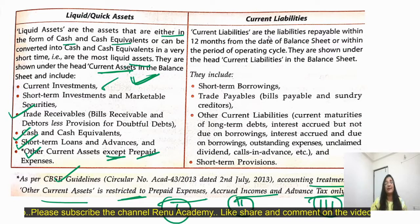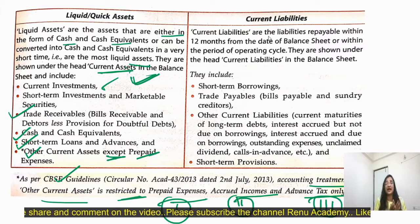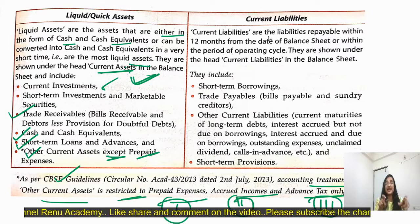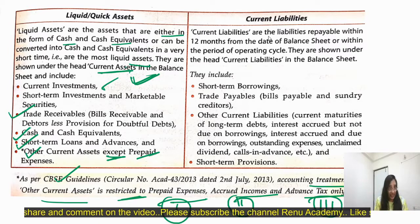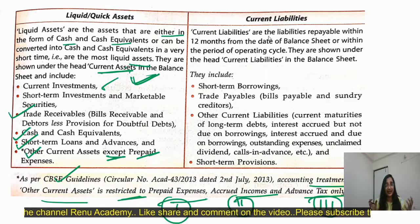Now, what is current liability? It is the liability which is payable under 12 months from the date of the balance sheet and within the period of the operating cycle. The liability we pay within 12 months from the balance sheet date is called current liability.